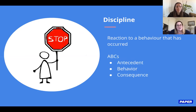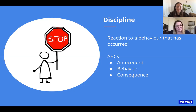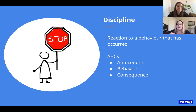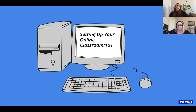When discipline is needed, it is also a learning opportunity for us as educators. Deal with it in the moment, then take a few minutes afterward to analyze what happened. Always remember the ABCs: the Antecedent, the Behavior, and the Consequence. By looking at the ABCs you can build into your management a system to avoid that type of behavior occurring again.